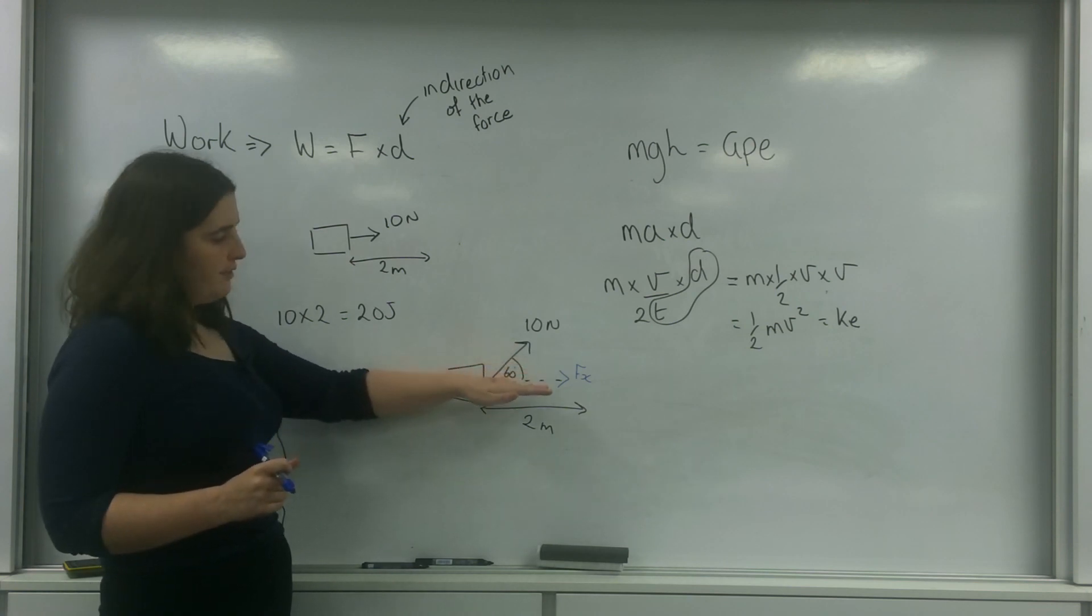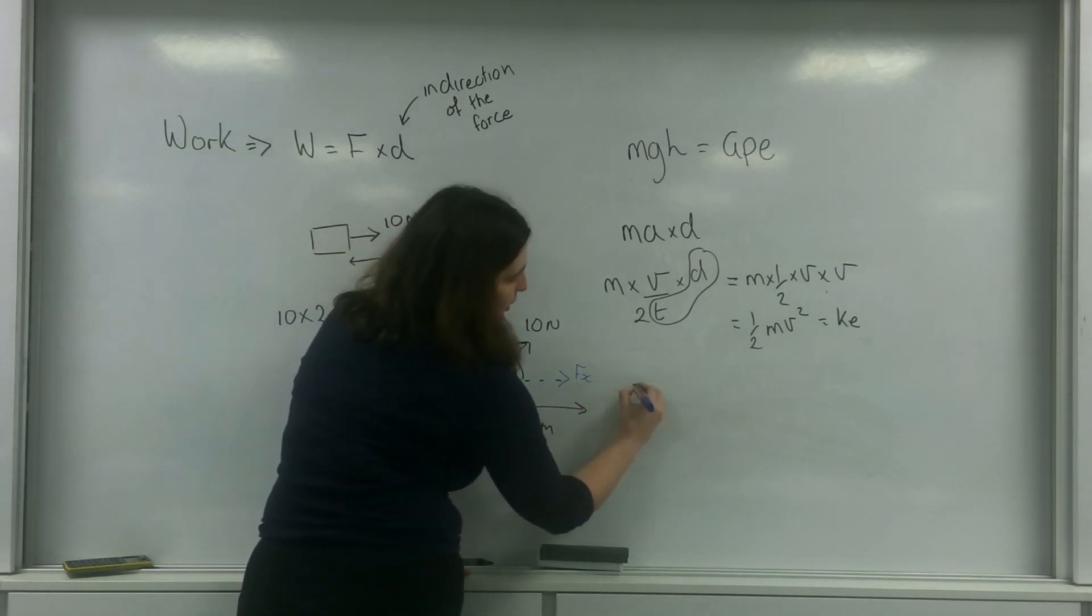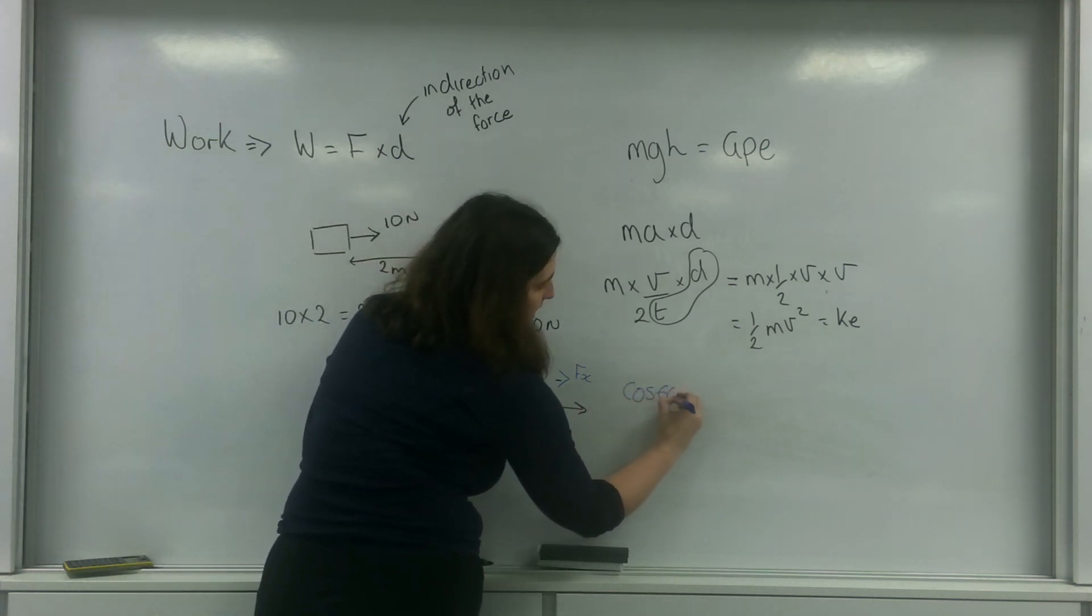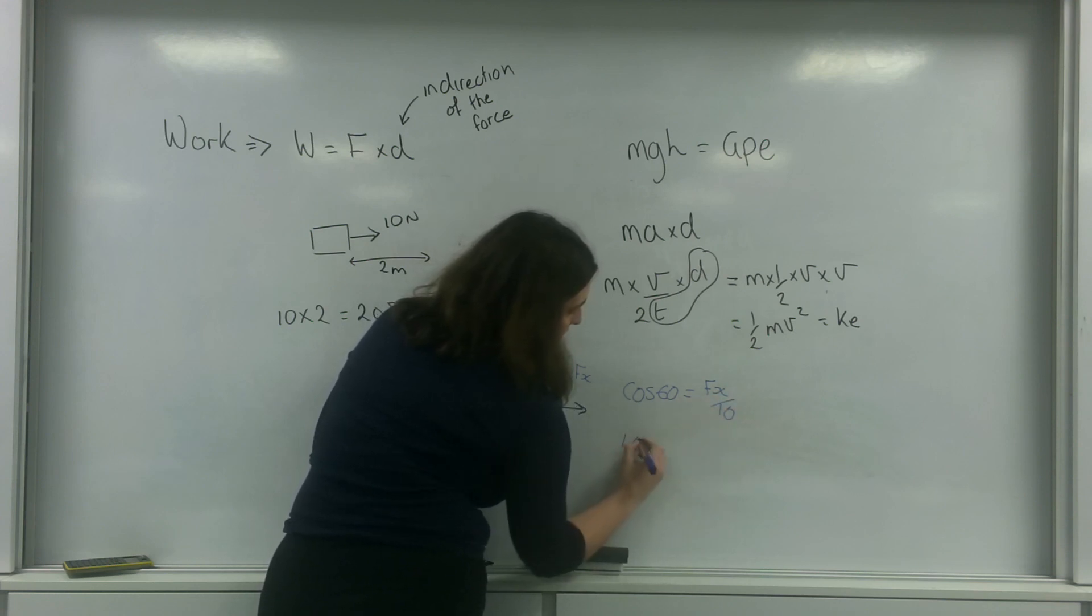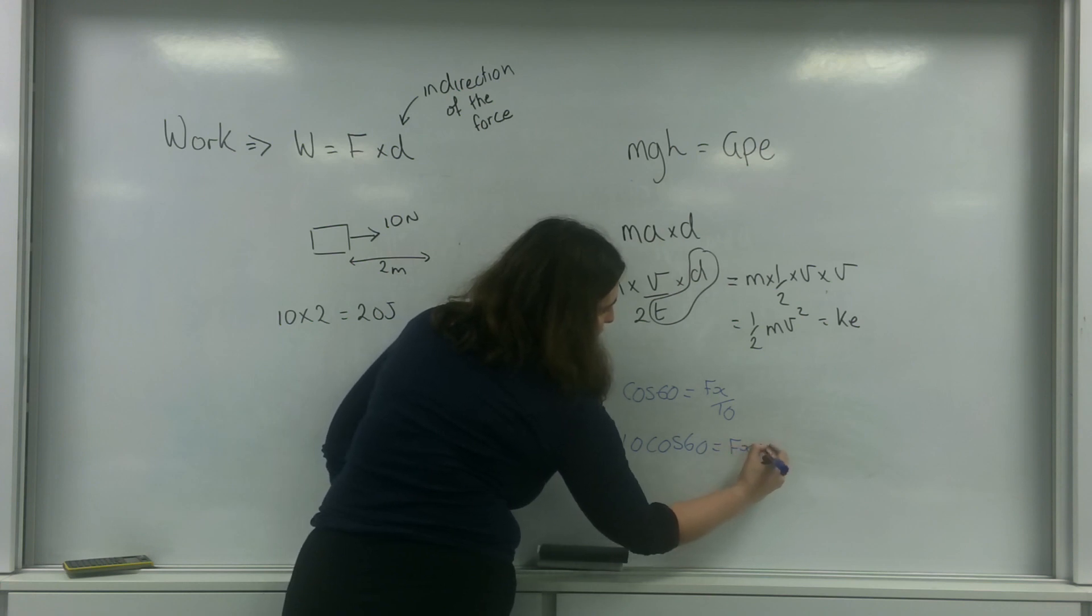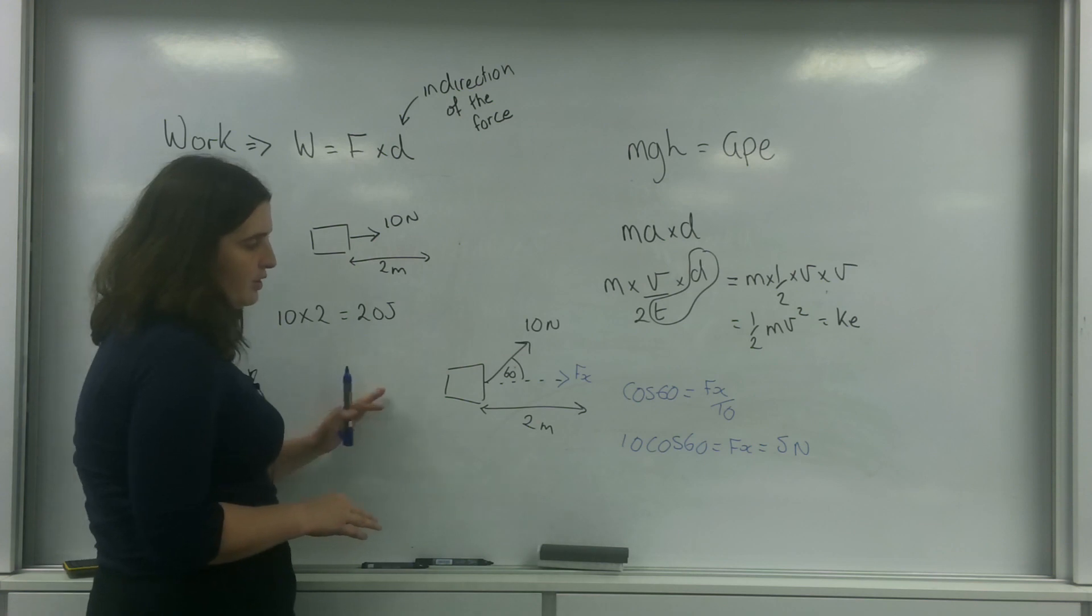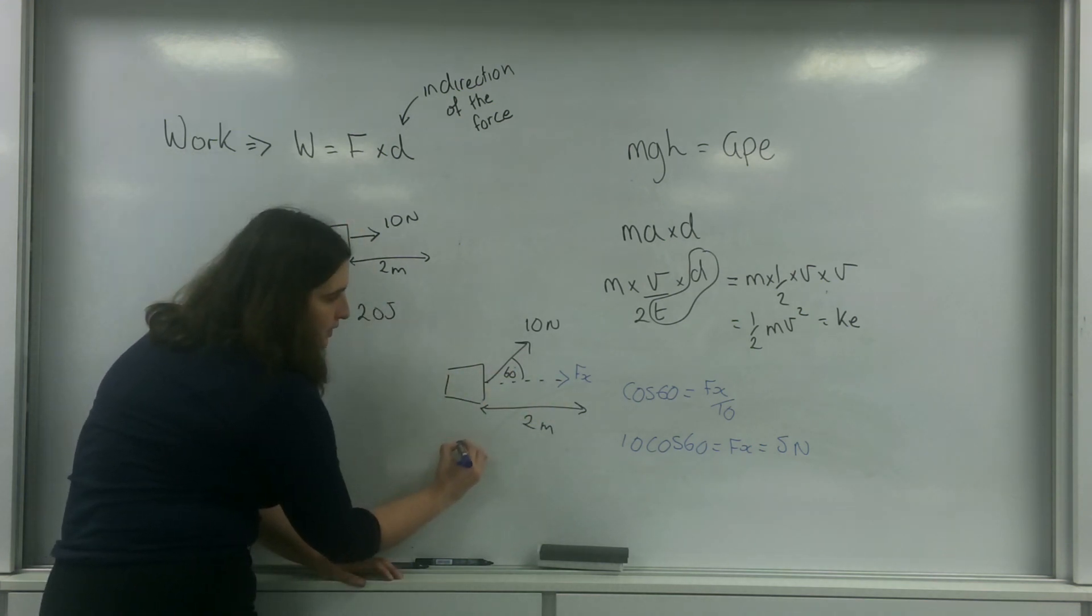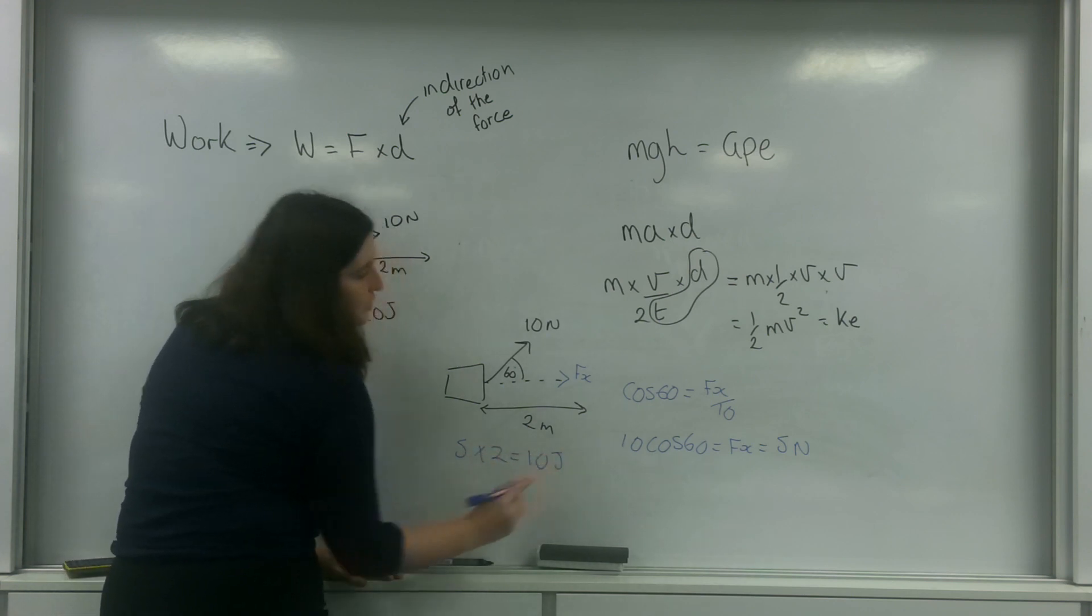This is the hypotenuse, that is the adjacent, so I'm going to use cos. So cos 60 equals fx over 10, 10 cos 60 equals fx, which is 5 newtons. So the energy that I'm using to go this direction would be 5 times 2, which is 10 joules.